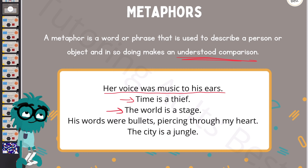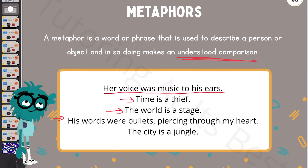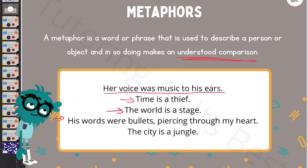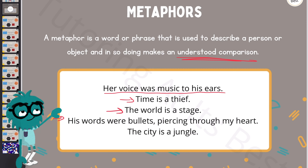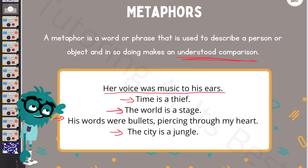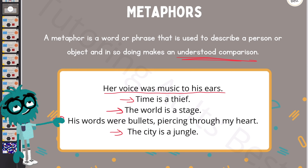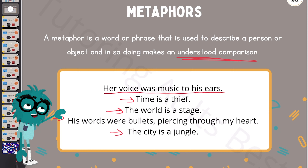'The world is a stage,' suggesting that life is a theatrical performance with individuals playing different roles. Or more interestingly, 'his words were bullets piercing through my heart,' with this metaphor comparing the impact of his words to the sharpness and pain of bullets. And finally, 'the city is a jungle,' comparing the chaotic and bustling nature of the city to the wild and unpredictable environment of a jungle.